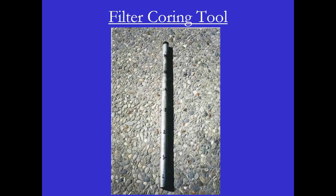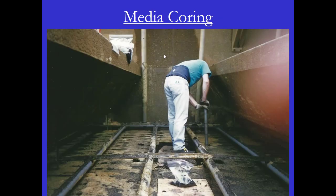Another important tool is the filter coring tool. I made mine with a one-and-a-half inch galvanized pipe, marked with a magic marker at two inch, six inch, 12 inch, 18 inch, 24 inch, 30 inch, and 36 inch. The media coring tool collects media from various locations in the filter at various depths, and that media is put into a bag to create a composite. That composite is sent to a laboratory to test for the uniformity coefficient and the effective size of the media to see if they're well matched.